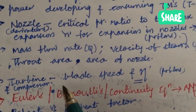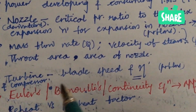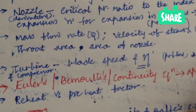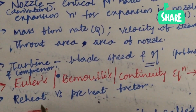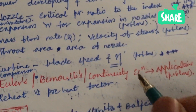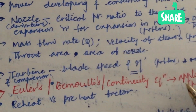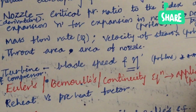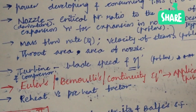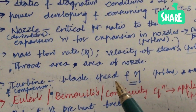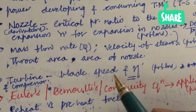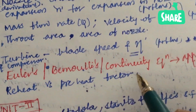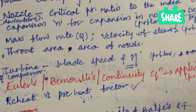Next, it is all about turbine types, compressors, blade speed, efficiency, and problems related to turbines. It also covers Euler's, Bernoulli's, and the continuity equation and their applications. These may form the second question, 2A as well as 2B. There may also be 5-mark questions followed by 10-mark problems, and they may ask the difference between reheat factor and preheat factor for 5 marks, along with a related problem.